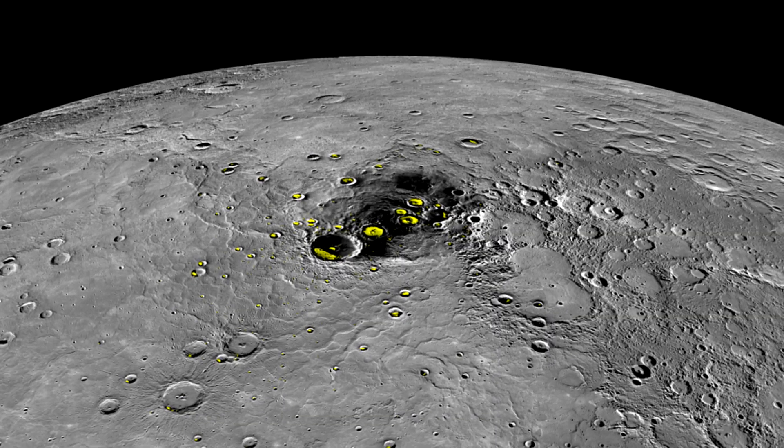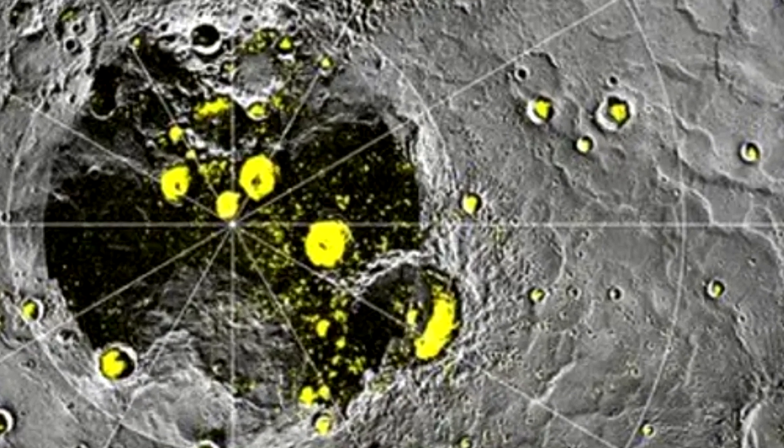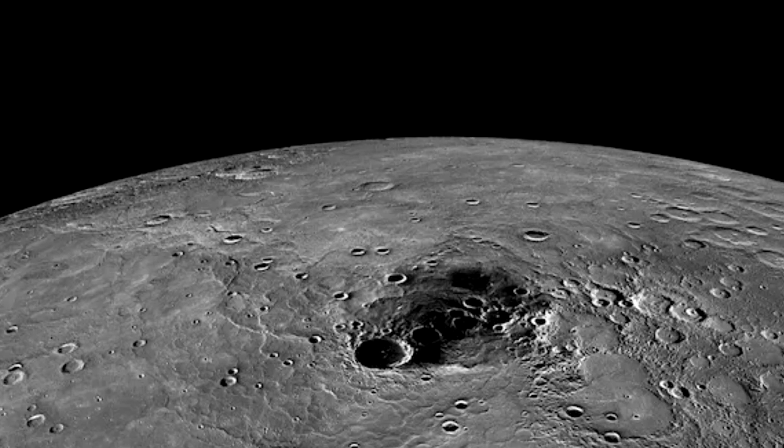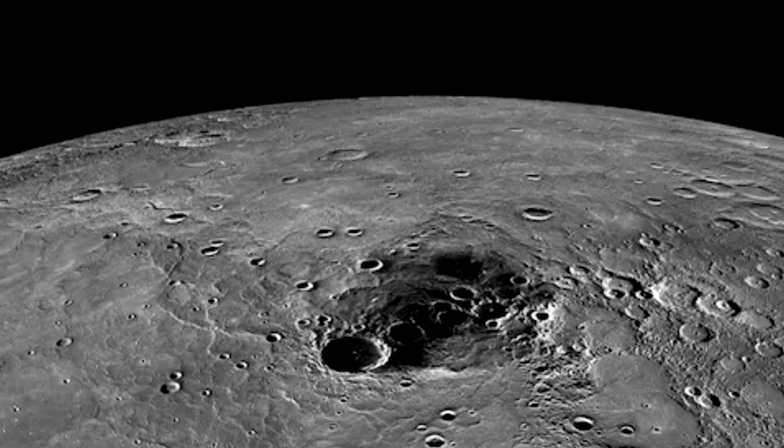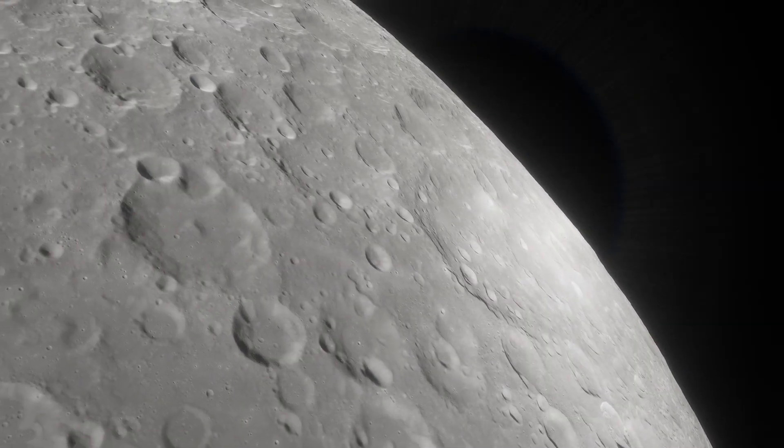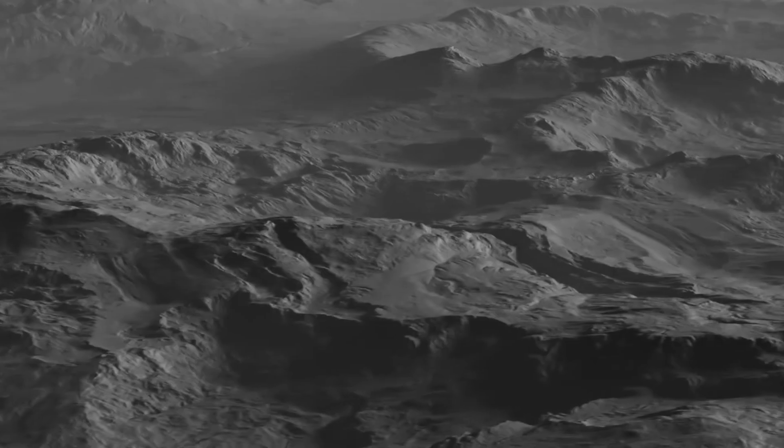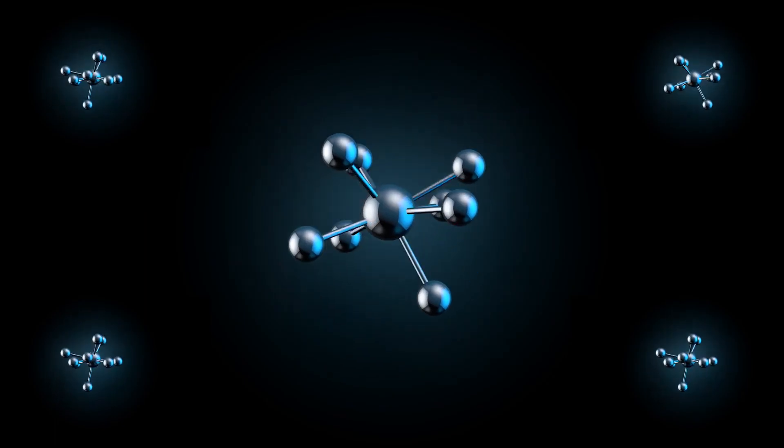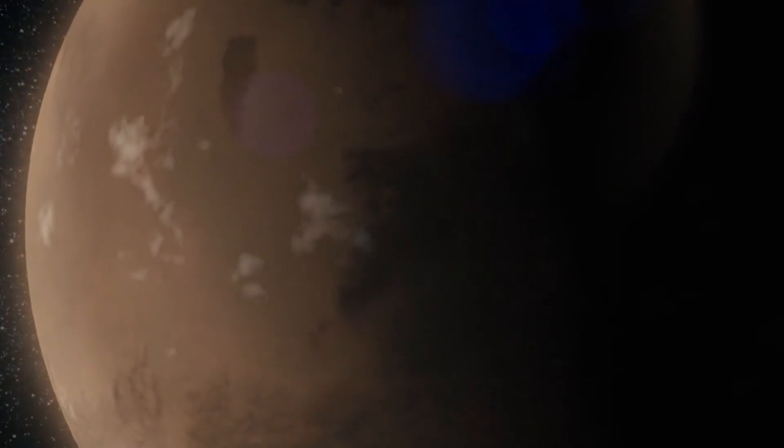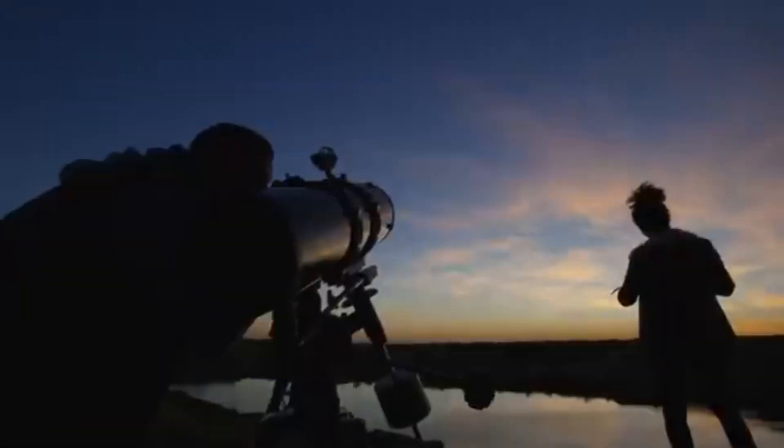One of the most exciting findings is the presence of water ice in permanently shadowed craters near Mercury's poles. Despite being so close to the sun, the ice persists because these areas never receive direct sunlight. Even more fascinating is the discovery of organic compounds within these craters, potentially consisting of complex carbon-based molecules that could have played a role in the origins of life on Earth. This raises the intriguing possibility that Mercury might hold clues about the beginnings of life in our solar system.